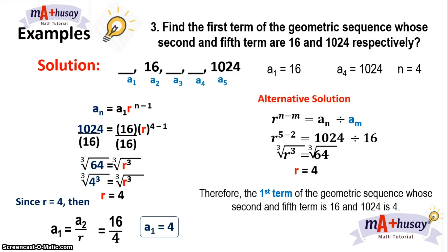Note that solving for the first term of the geometric sequence is a two-step problem. First, you need to solve for the common ratio. Then, solve for the first term.